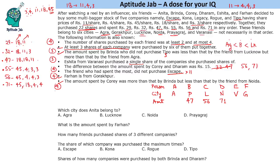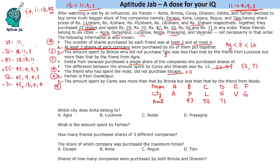Now deciding whether to split 11 or 18: if we split 11 as 4+4+3, then 11 appears only twice across all combinations, which violates the rule that at least three shares of each company must be purchased. So we cannot split 11 — we must split 18. Therefore 18 is split as 11+4+3, and 11 remains intact.